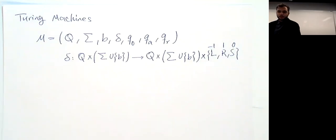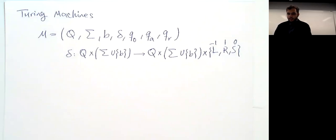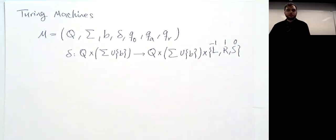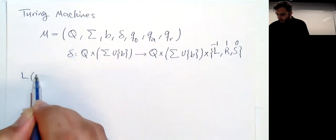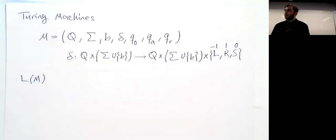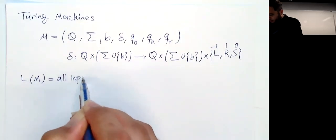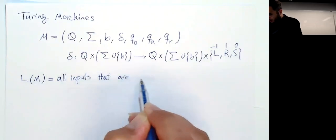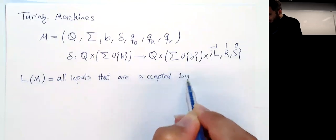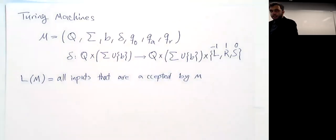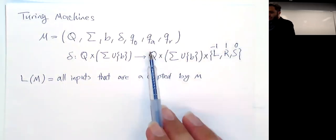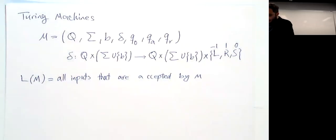The language of a Turing machine M is the set of all input strings accepted by M—finite inputs for which the unique run reaches QA after finitely many steps. Other possibilities are that the run reaches QR and rejects, or it goes on forever without reaching either state.